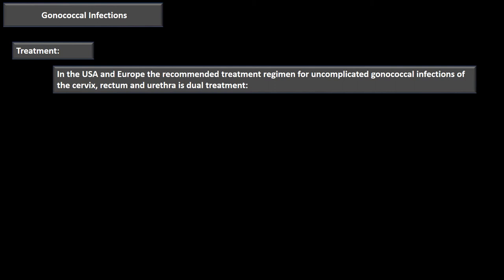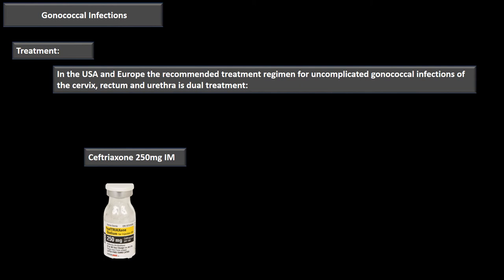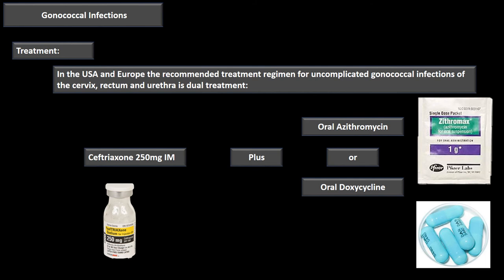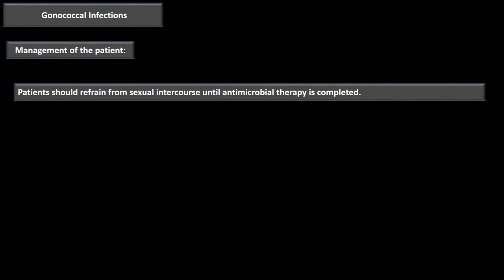Treatment for gonococcal infections in the USA and Europe: the recommended regimen for uncomplicated gonococcal infections of the cervix, rectum, and urethra is dual treatment. That consists of ceftriaxone 250 mg intramuscularly — also marketed as Rocephin, often given in the glute — plus azithromycin 1 gram orally, available as a powder packet mixed with water. Alternatively, ceftriaxone 250 mg IM can be given with oral doxycycline 100 mg twice a day for about seven days.